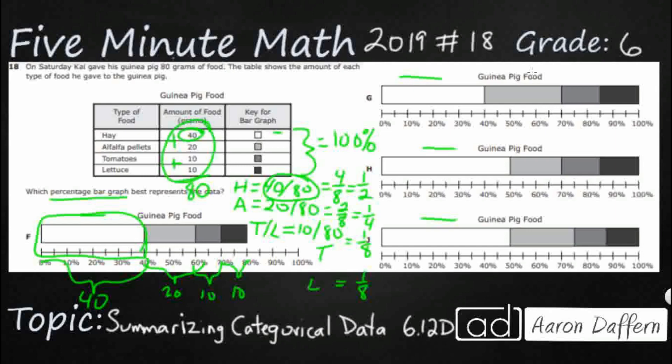The problem is it only adds up to 80%. Remember percentage bar graphs have to add up to 100%. So unless your total happens to be 100 you cannot just take all your raw numbers, throw them on a percentage bar graph and say that's the answer. That is incorrect because it does not accurately represent the percentages and it doesn't even add up to 100.